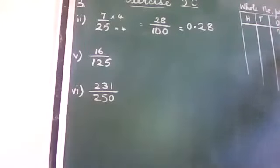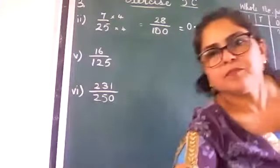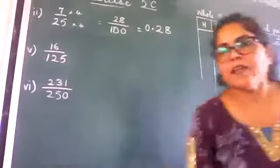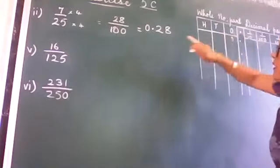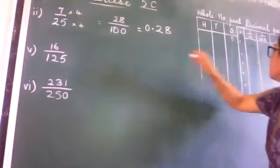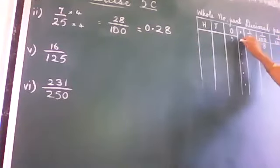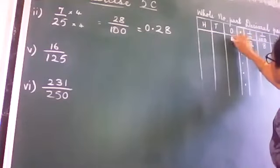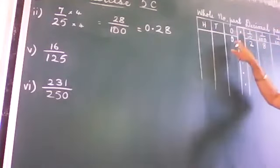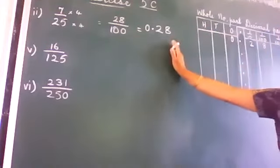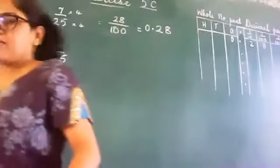In the table, how would you write it? 28 until the 100 place. 100 place is here. So 8 will be here, 2 will be here. Automatically the point will come here. No whole number. So put a 0. 0.28. You got here 0.28. That's that.